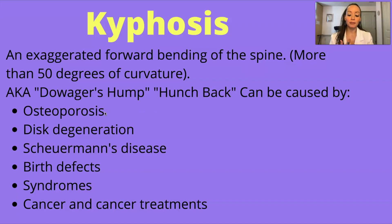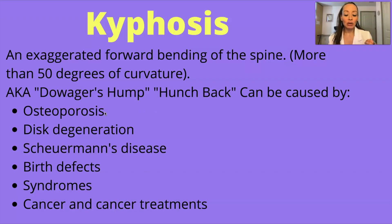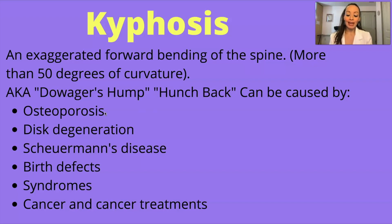Mild compression fractures don't really produce noticeable signs or symptoms. Osteoporosis is the most common cause of kyphosis. Over time, wedging and fractures of the vertebrae produce a gradual loss of height and then that humped back effect. This bone-thinning disorder can cause spinal curvature. Osteoporosis is most common in older women and people who have taken corticosteroids for long periods of time.